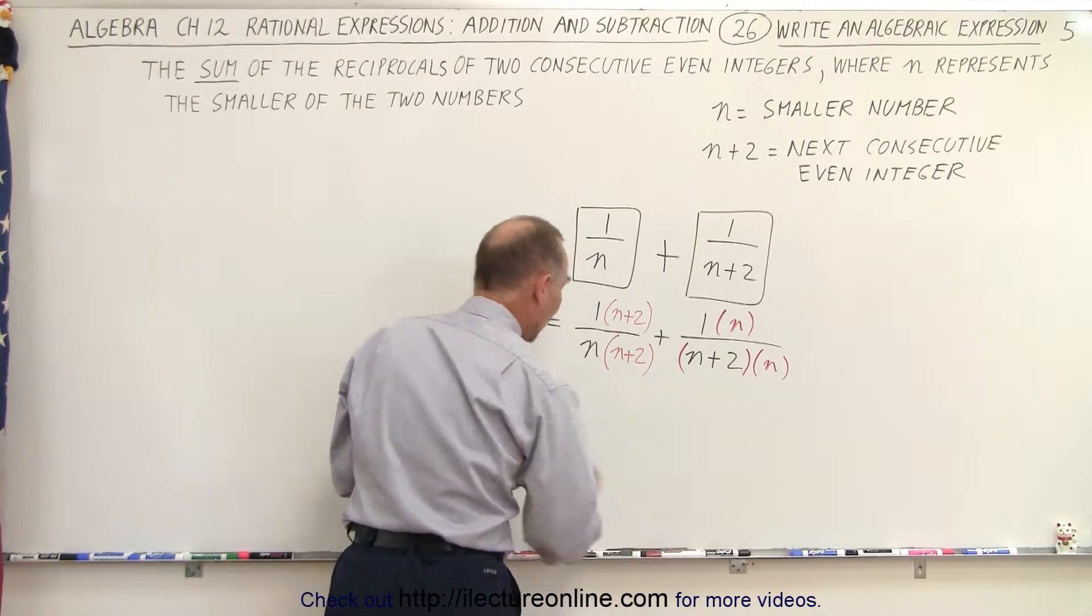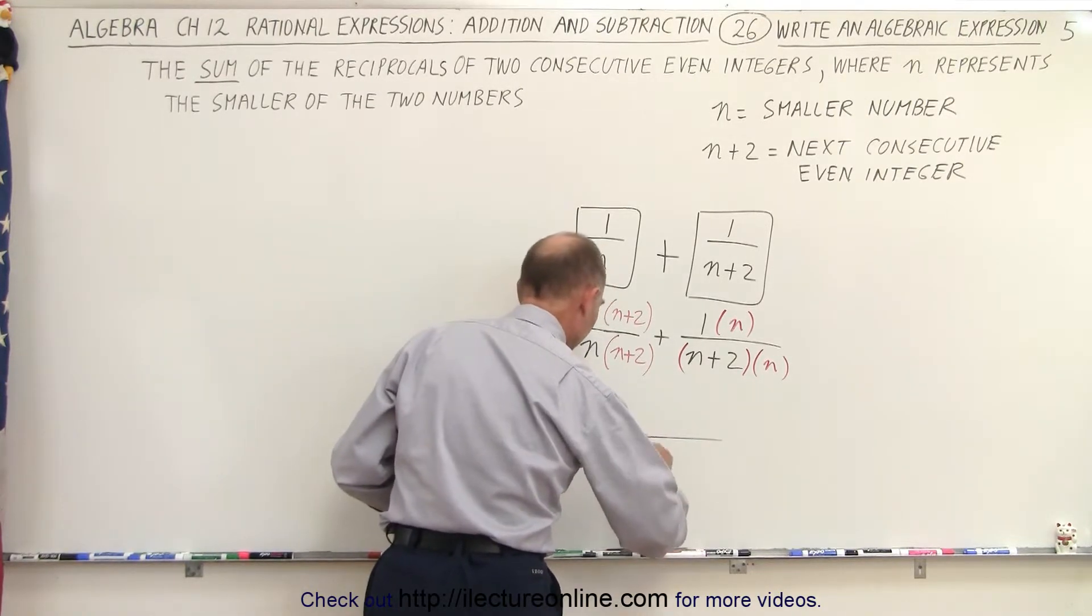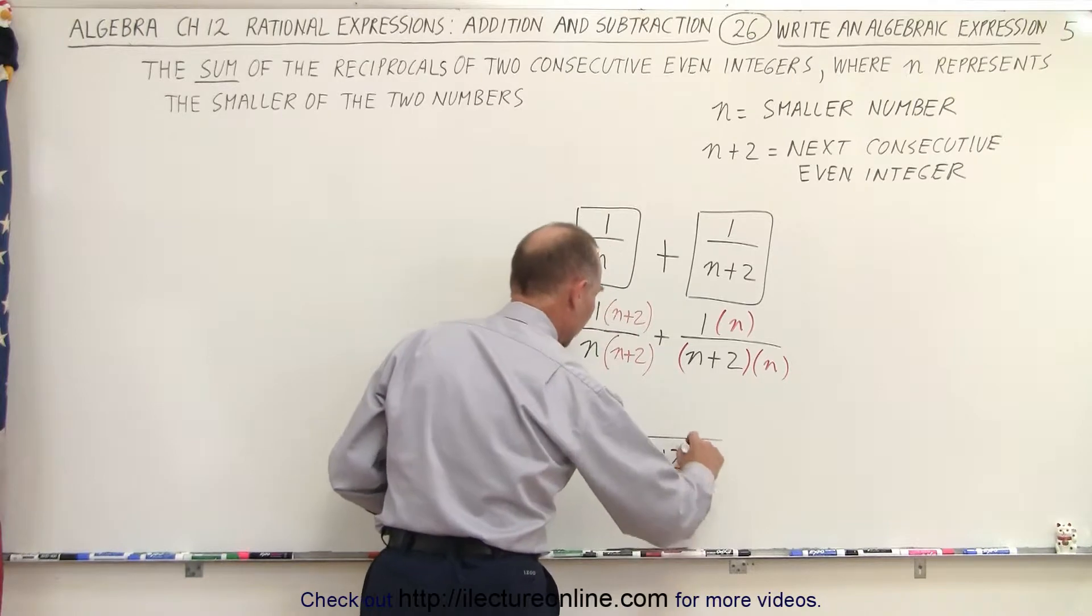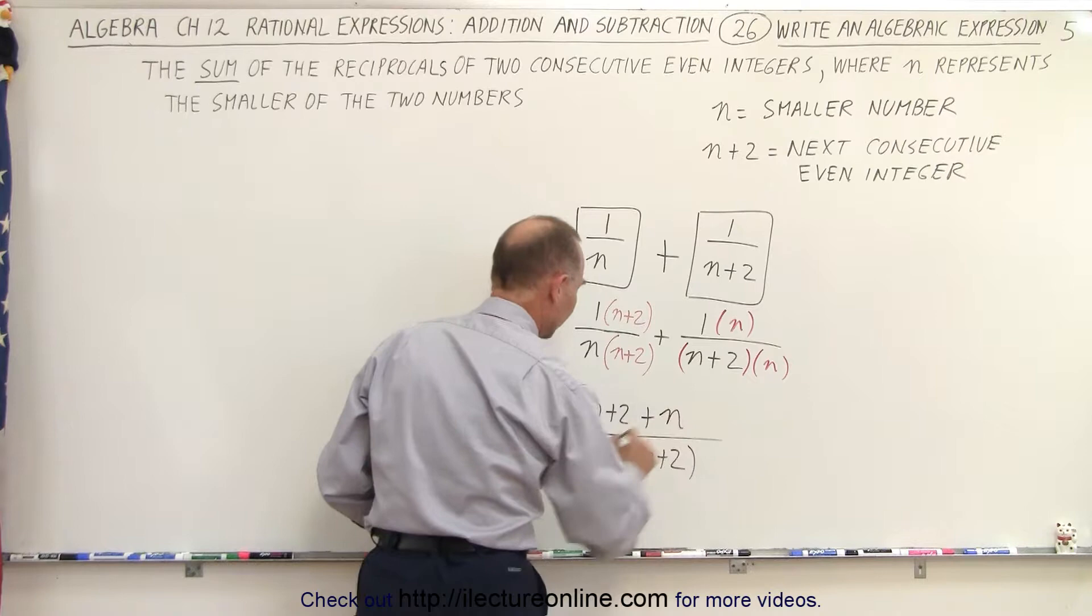So now we have a common denominator. This can be written over the same common denominator n times n plus 2. And in the numerator, we're going to add these together: n plus 2 plus n.